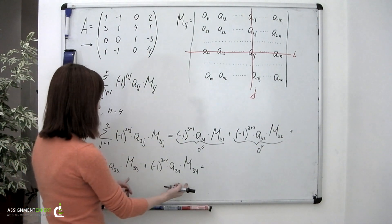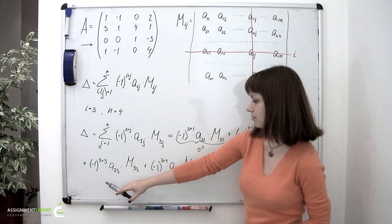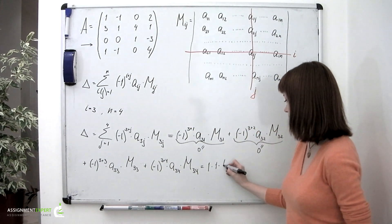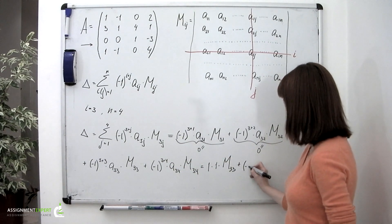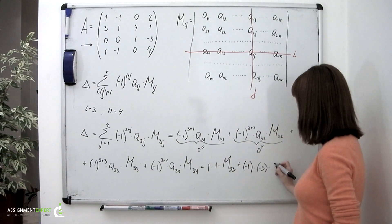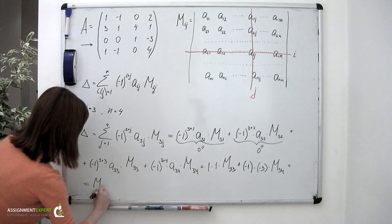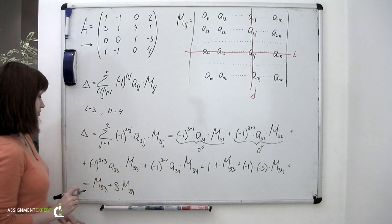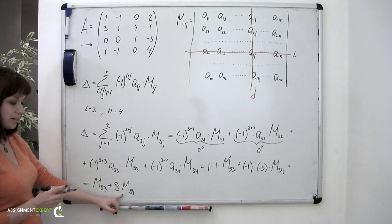So we can substitute the known values into the formula. Negative 1 to the power of 6 equals 1, multiplied by 1 and by minor M sub 3,3, plus negative 1 to the power of 7 equals negative 1, times negative 3, times M sub 3,4. That simplifies to M sub 3,3 plus 3 times M sub 3,4. So the formula we'll use to find our determinant is: delta equals M sub 3,3 plus 3 times M sub 3,4.